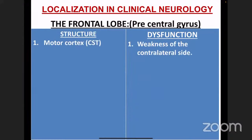The frontal lobe has the precentral gyrus, which is very important because from this area the corticospinal tract begins and goes to the anterior horn cell of the spinal cord — what we call the upper motor neuron. If the motor cortex gets affected, the patient will develop weakness on the contralateral side. The corticospinal tract descends and crosses at the level of the medulla oblongata, so right frontal lesions produce left hemiplegia and left frontal lesions produce right hemiplegia.